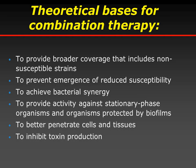Why do clinicians use combination treatment? The first point is to provide broader coverage that includes non-susceptible strains. The second is to prevent emergence of reduced susceptibility. The third is to achieve bacterial synergy, to provide activity against stationary-phase organisms and organisms protected by biofilms — especially with rifampin — to better penetrate cells and tissue, and to inhibit toxin production. All of these points are clearly demonstrated in the literature, except perhaps the prevention of emergence of resistance.